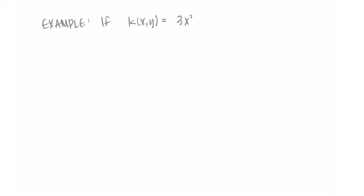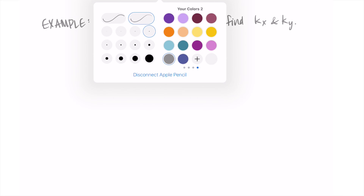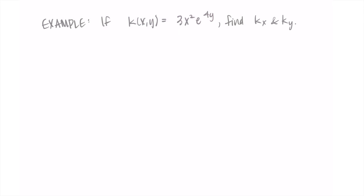Let's try another example. Let's say we have k of x and y equals 3x squared e to the 4y. We're going to find the partial derivative with respect to x and the partial derivative with respect to y. You can pause now if you want to try this first.